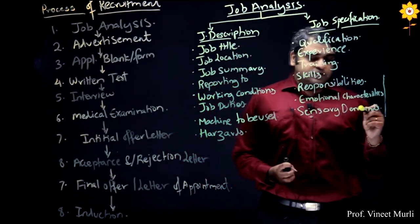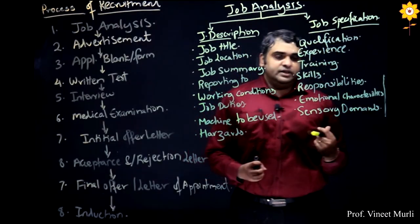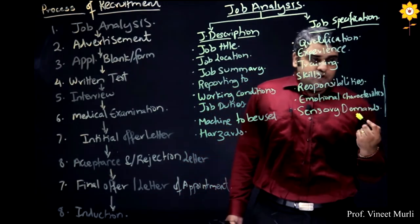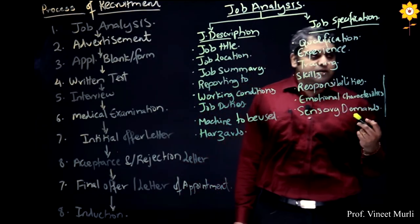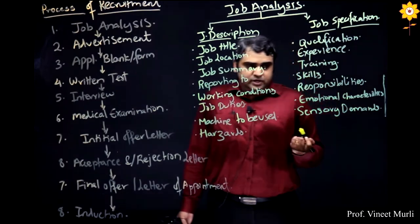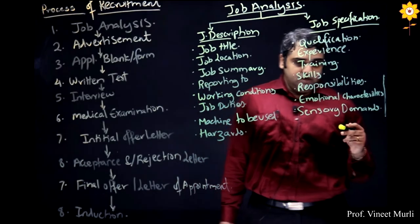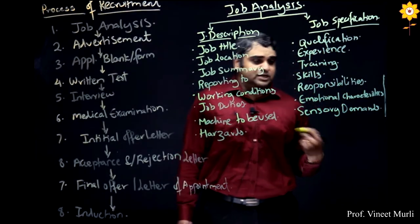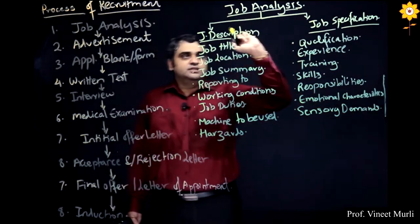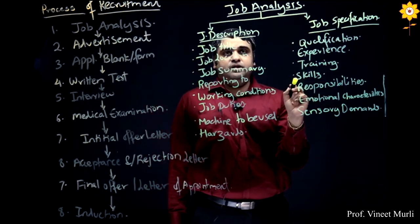Certain jobs require emotional stability or emotional characteristics. For example, people working in the service industry may require more emotional attributes than a person working in a manufacturing concern. Then for certain jobs you require sensory demand — for example, people working in the army, navy, or in a mine require good sensory organs to detect where the minerals are. This concludes job analysis, which is finding relevant information regarding the job.